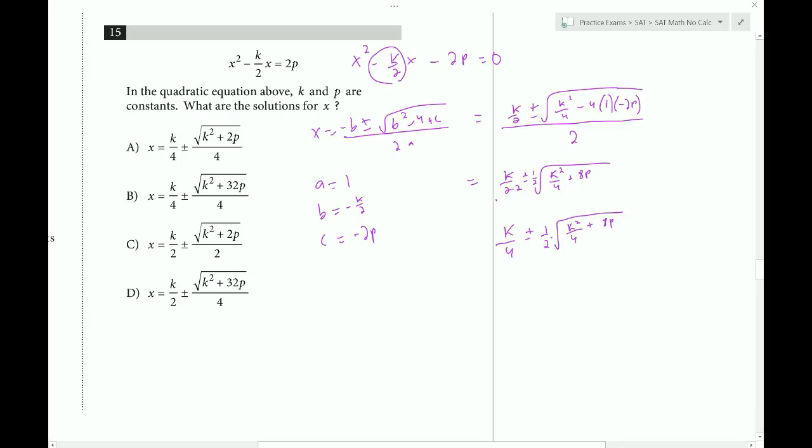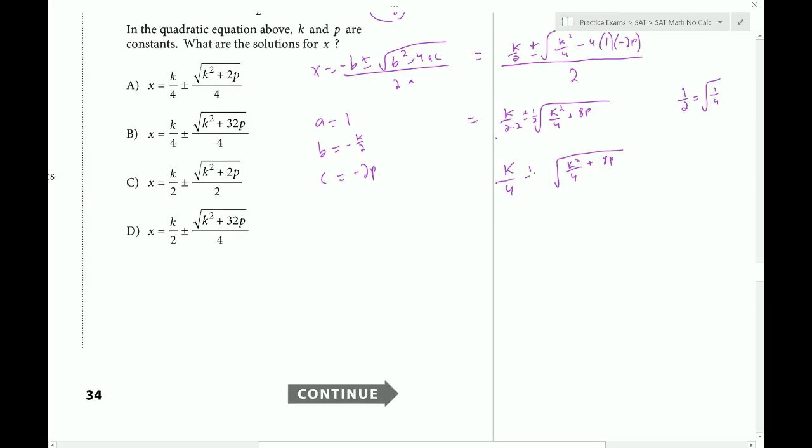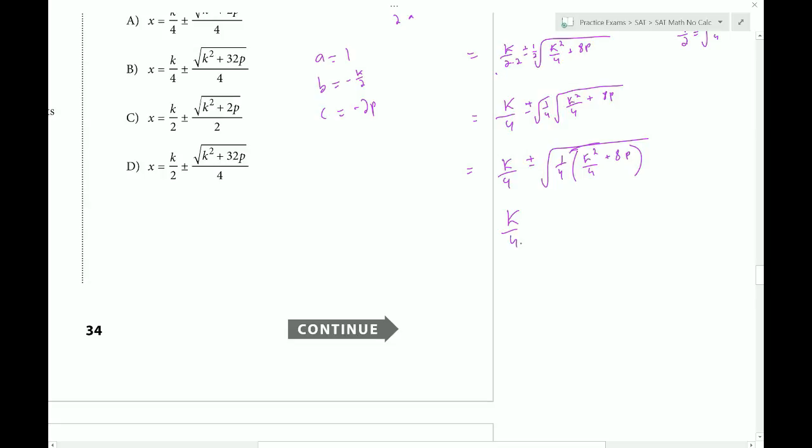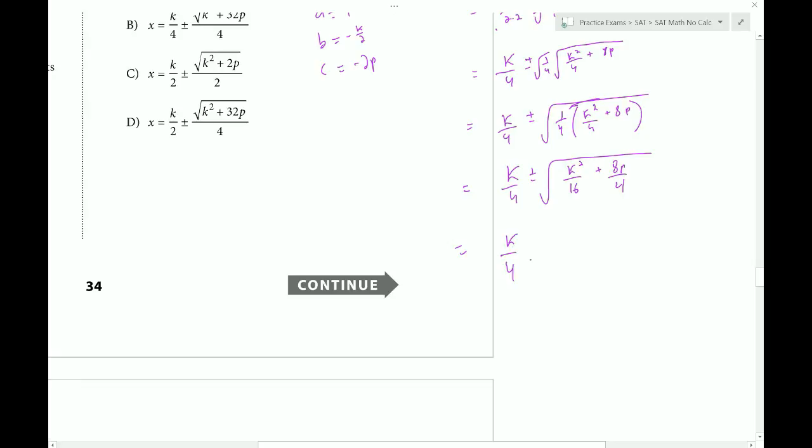So now we have to absorb this 1 half inside the square root. So to do that, I can rewrite 1 half to be the square root of 1 fourth. Because if I square root the top, I get 1. The square root of the bottom, I get 2. So it's the square root of 1 fourth. So I rewrite it as the square root of 1 fourth. That way I can bring it into the parentheses here. K over 4 plus or minus the square root of 1 fourth times k squared over 4 plus 8p. And then I can bring it inside using distribution. So k over 4 plus or minus the square root of k squared over 16 plus 8p over 4. Simplify this down. So k over 4 plus or minus the square root of k squared over 16 plus 8 over 4 is just 2. So it should be 2p.